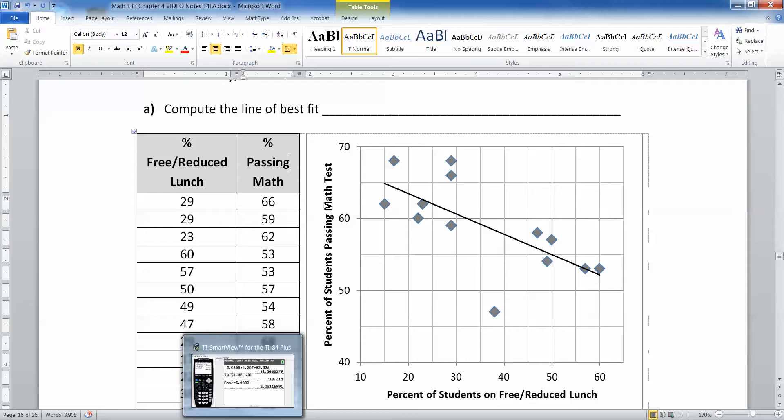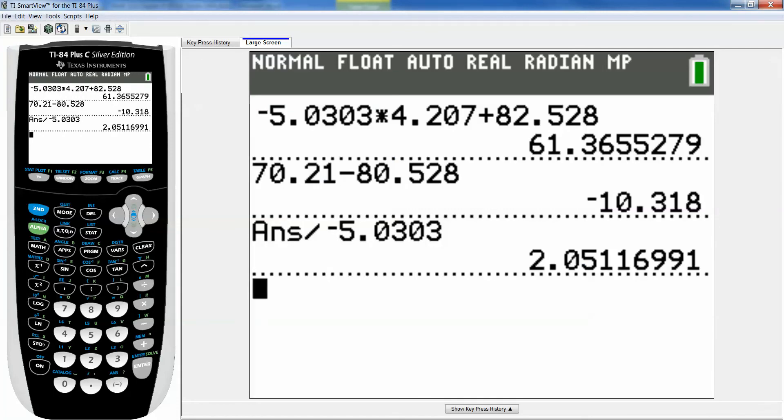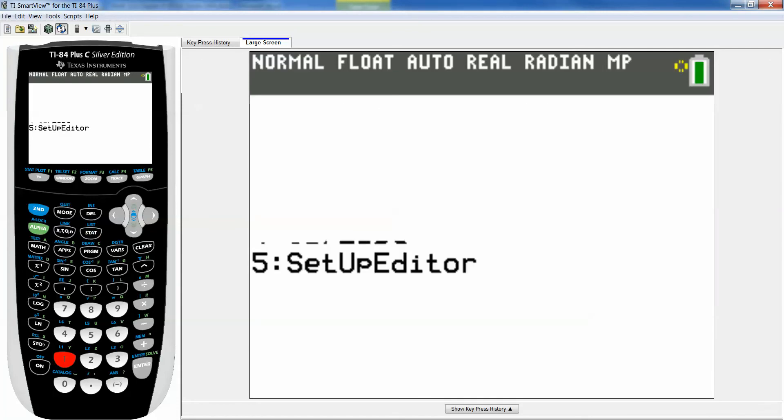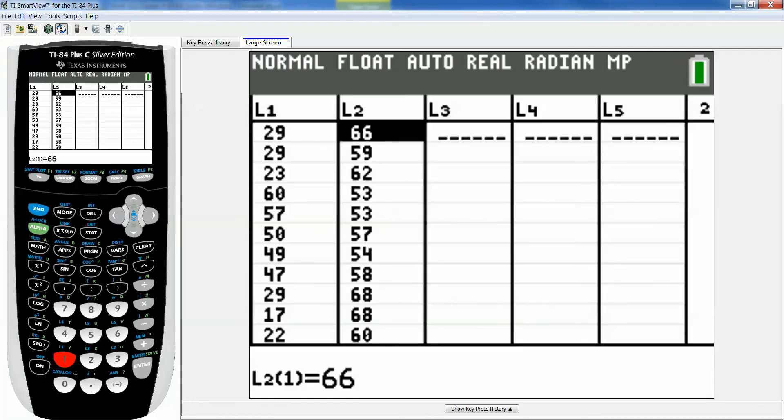So we're going to use our calculators. If I press stats and number one or edit you can see I actually still have the data in here from last time. If not I would have to take the time to go delete out the old data, clear out the old data and then type in the new data. But I already have it so I'm ready to go.